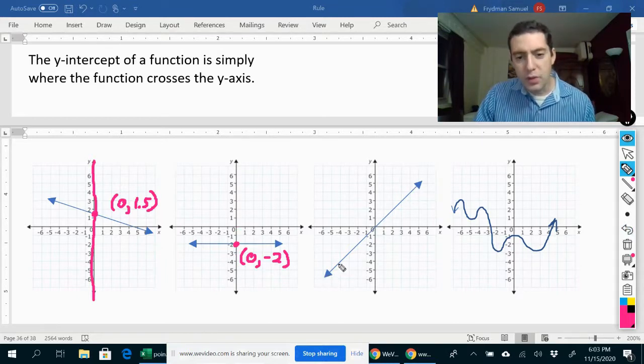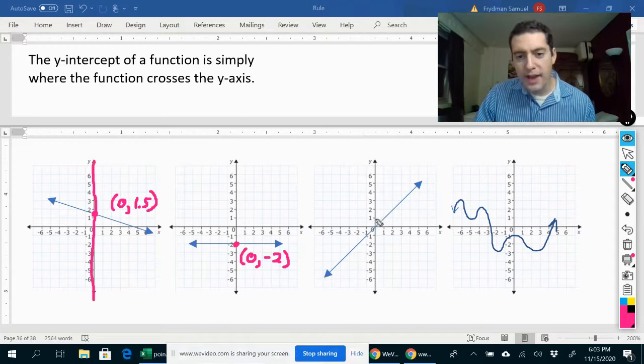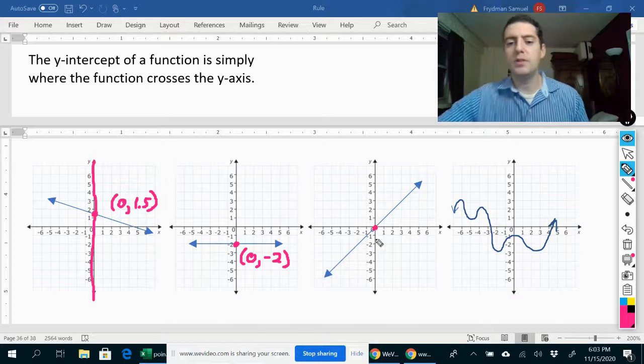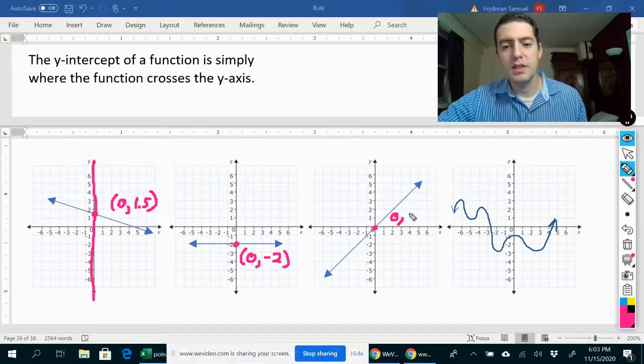Okay, now what about this one? Where does it cross the y-axis here? It crosses it right over here, and that would actually be the origin. That would be zero, zero.